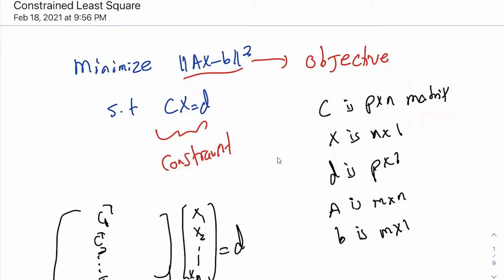Hi everyone, today I would like to talk about constrained least squares. In the last video I talked about multi-objective least squares, and in the video before that I talked about least squares. The constrained least squares is like a normal least squares but with the difference that it has a constraint or set of constraints. The multi-objective least squares can also be expressed as a constrained least squares — that's a special case.